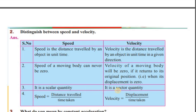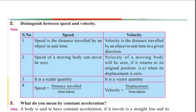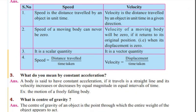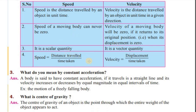Speed is a scalar quantity; velocity is a vector quantity. Velocity has both magnitude and direction — that makes it a vector quantity. Speed equals distance traveled divided by time taken. Velocity equals displacement divided by time taken. This is the difference between speed and velocity.